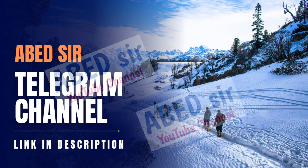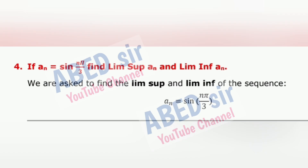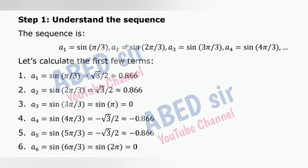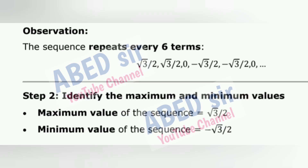Next important short question 4: If aₙ = sin(nπ/3), find lim sup aₙ and lim inf aₙ. Step 1: Understand the sequence. Let's calculate the first few terms. Observation: The sequence repeats every 6 terms. Step 2: Identify the maximum and minimum values. Maximum value of the sequence = √3/2. Minimum value of the sequence = −√3/2.